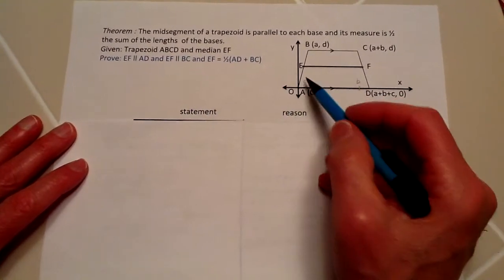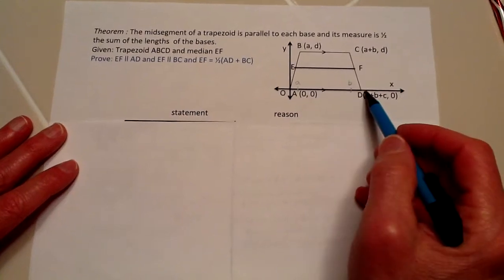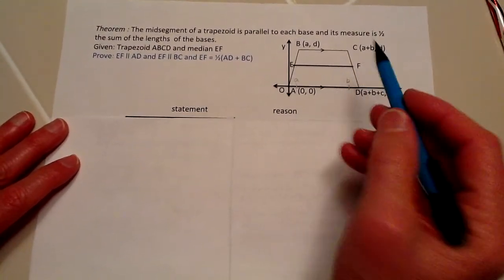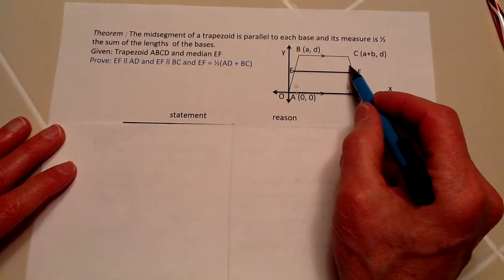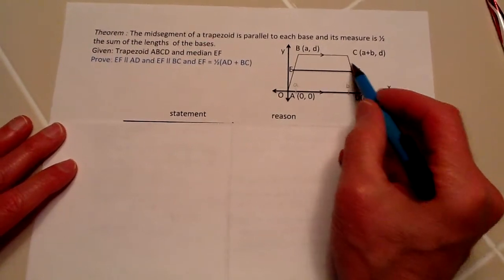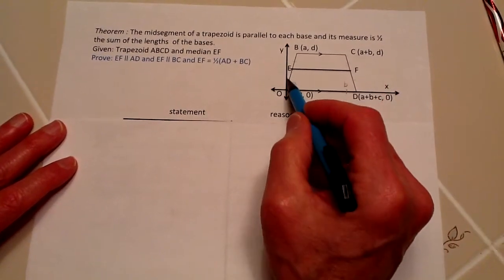We have trapezoid ABCD and we have the median EF. As you recall, the median cuts these sides in two, which means those sides are going to be equal to each other.